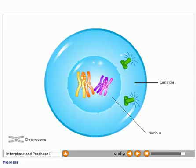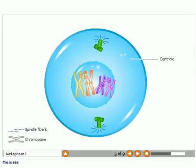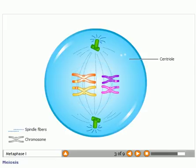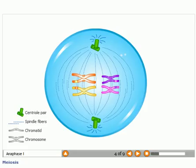The centrioles replicate and move apart. The nuclear membrane becomes less distinct and spindle fibers form between centrioles. Pairs of chromosomes align along the middle of the cell. Each pair consists of two chromatids attached at the center.